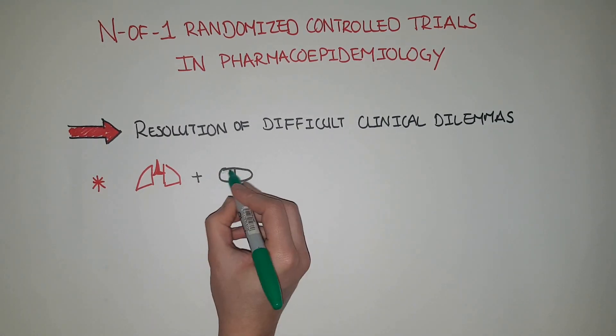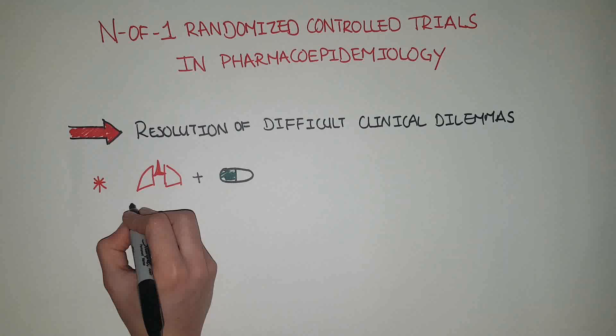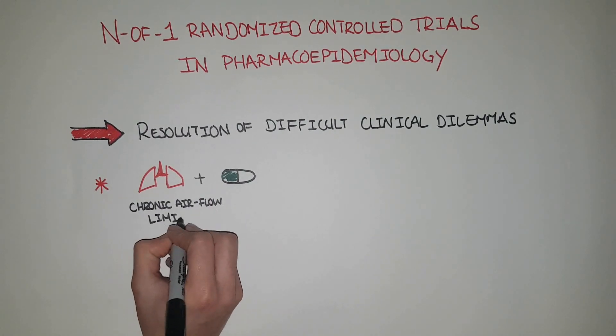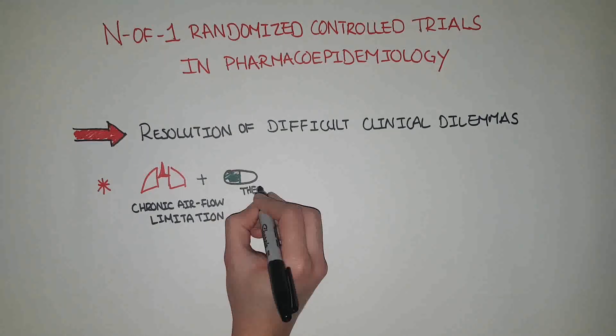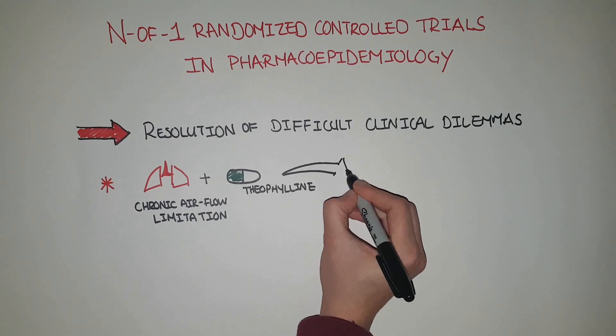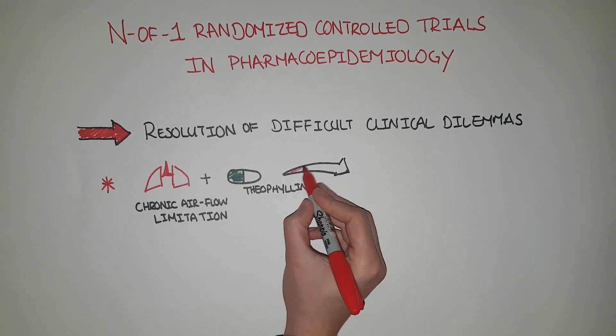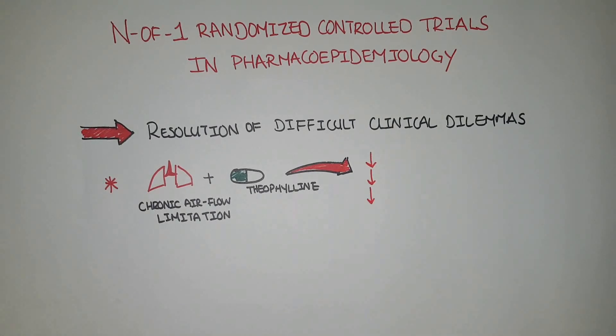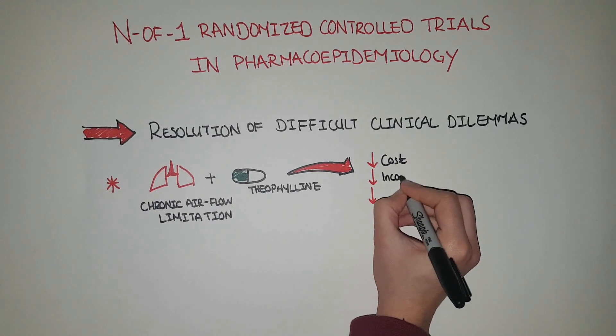The N-of-1 RCTs did not affect quality of life or functional status. However, fewer patients in the N-of-1 RCT groups ended up receiving the drug in the long-term. So, N-of-1 RCTs saved patients the expense, the inconvenience, and the potential toxicity of long-term theophylline therapy that was of no use to them.